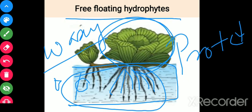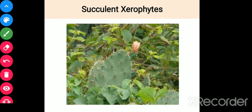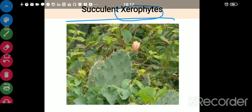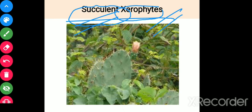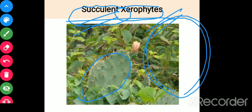Next is the succulent xerophyte. Xerophyte is a plant that survives in areas with very little water, like a desert. Succulent means fleshy. The best example is Opuntia from the cactus family. You can see a paddy-like structure of green color with small spines. This was mentioned in a previous topic — the expanded part and the small spine.